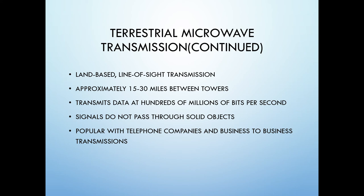Microwave has some drawbacks as well. First, it travels in a straight line and therefore does not follow the curvature of the earth. Another drawback is that microwave does not pass through solid objects, and any changes in weather patterns such as rain or fog can attenuate microwave signals. These issues limit their transmission distance.